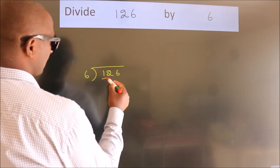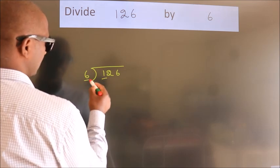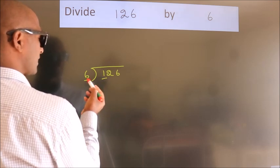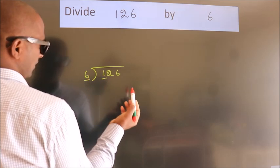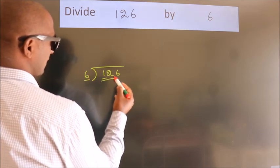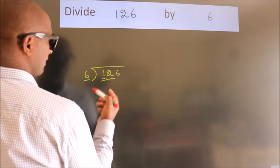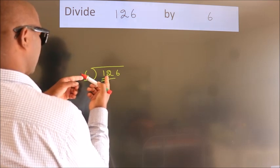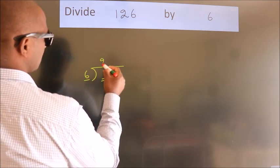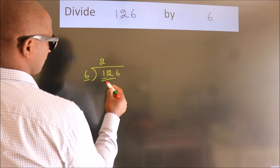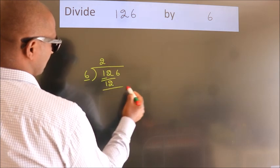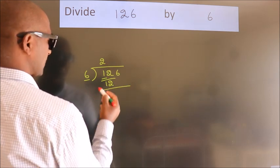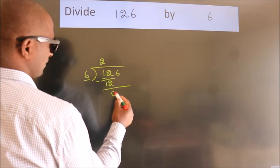Here we have 1, here 6. 1 is smaller than 6, so we should take 2 numbers: 12. When do we get 12? In the 6 table, 6 twos are 12. Now we subtract and we get 0.